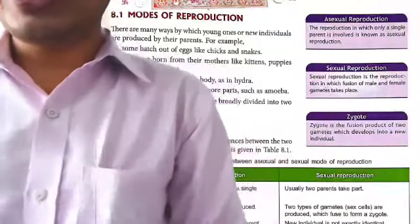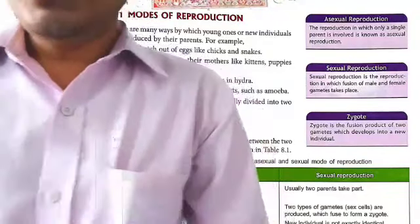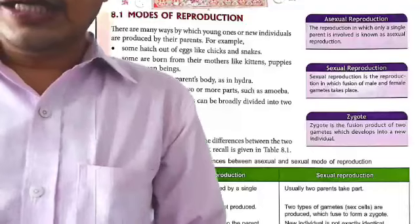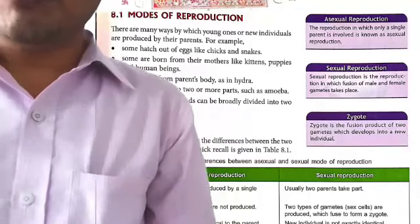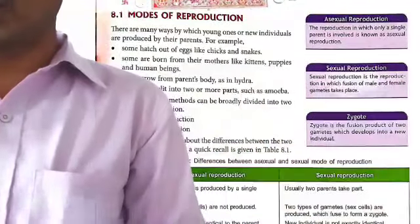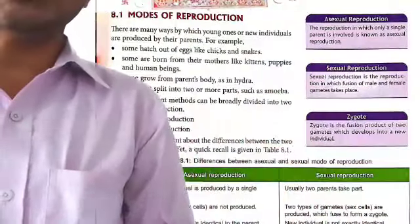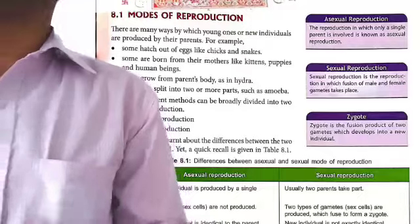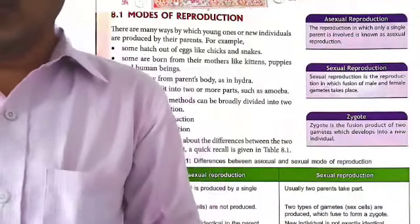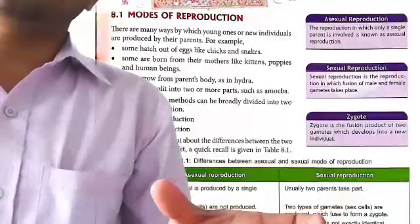Birds lay eggs and chicks and snakes are born. Human beings are born. Kittens and puppies are born. Hydra and amoeba are also examples. Reproduction is in two modes: asexual reproduction and sexual reproduction. In asexual reproduction, a single parent is involved — one type of parent.